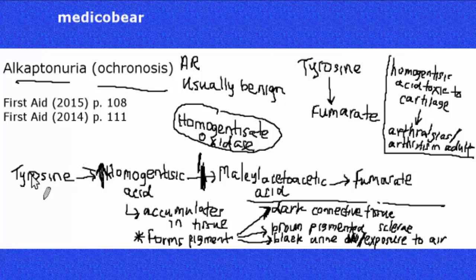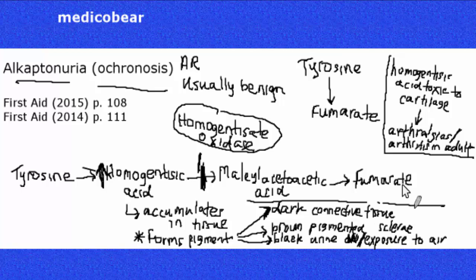To summarize alcaptonuria: it's a problem with tyrosine being converted to fumarate, specifically due to a deficiency of homogentisate oxidase. Homogentisic acid builds up, accumulates in tissue forming pigment, leading to dark connective tissue, brown sclera, and black urine on exposure to air. In adult life, patients develop arthritis and arthralgias. Alcaptonuria is definitely tested and something every medical student needs to know.